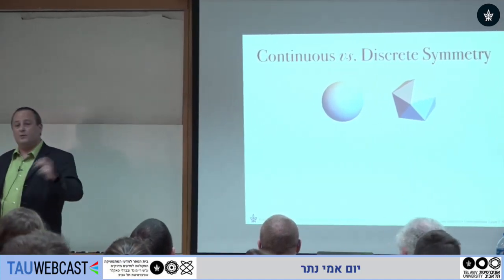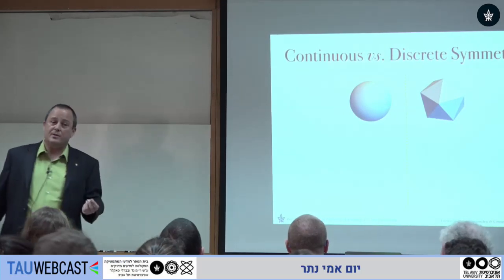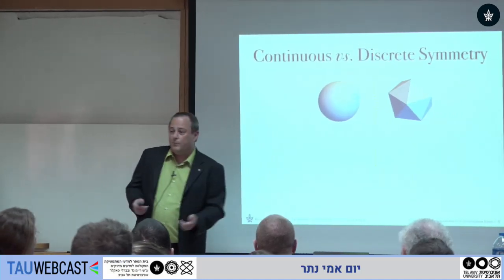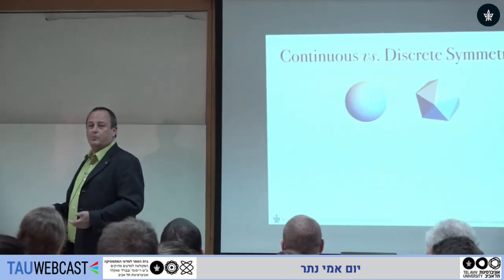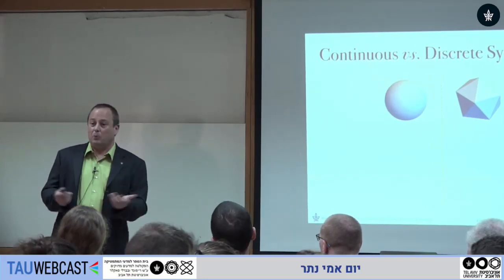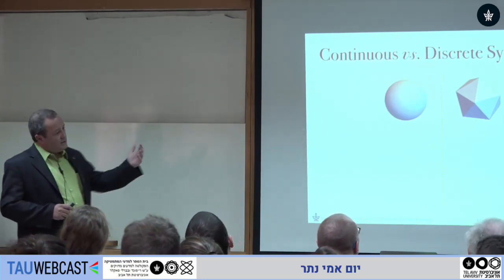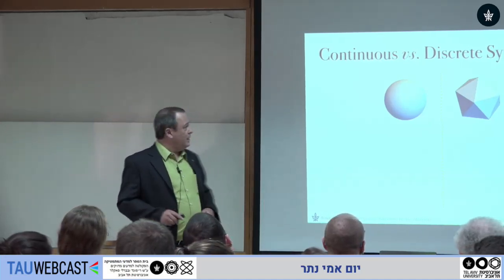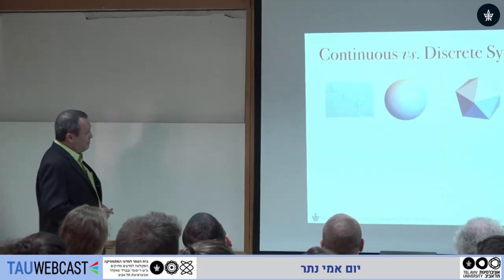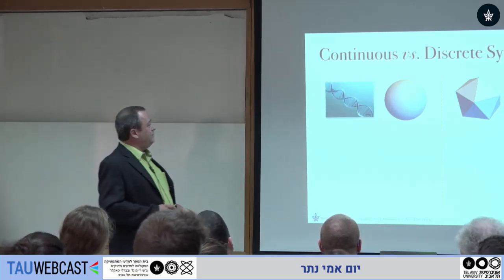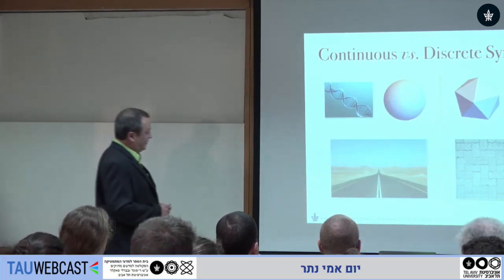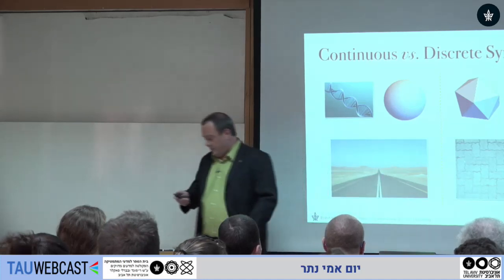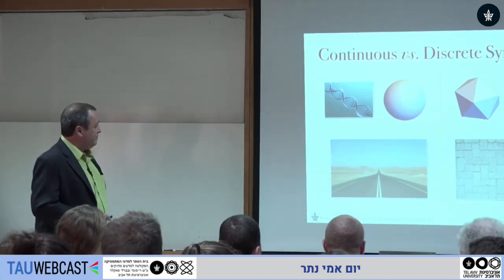For this talk, it will be important to distinguish between continuous and discrete symmetries. Symmetries are described using group theory, because applications of symmetry operations one after the other form the structure of a group. I have examples from geometry, from real life, and a man-made example. This infinite road has a discrete set of translations that leave it invariant — that is continuous symmetry.